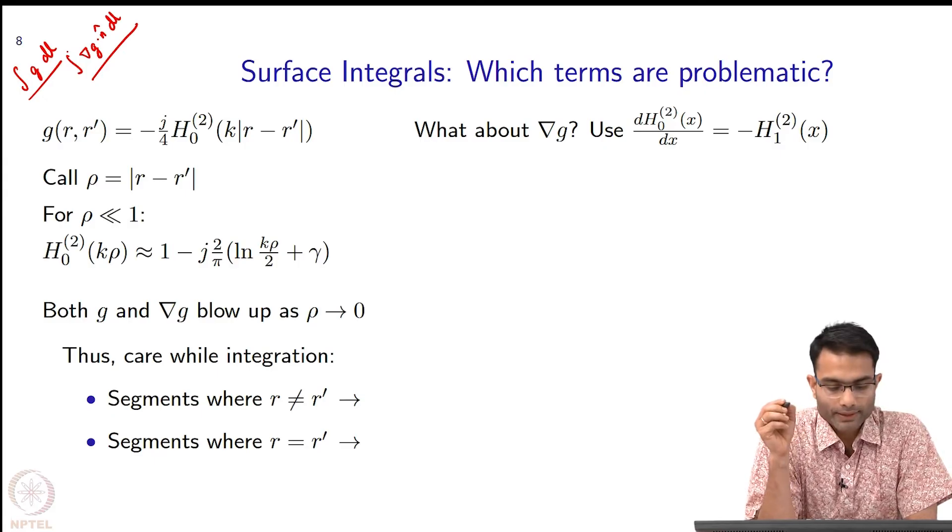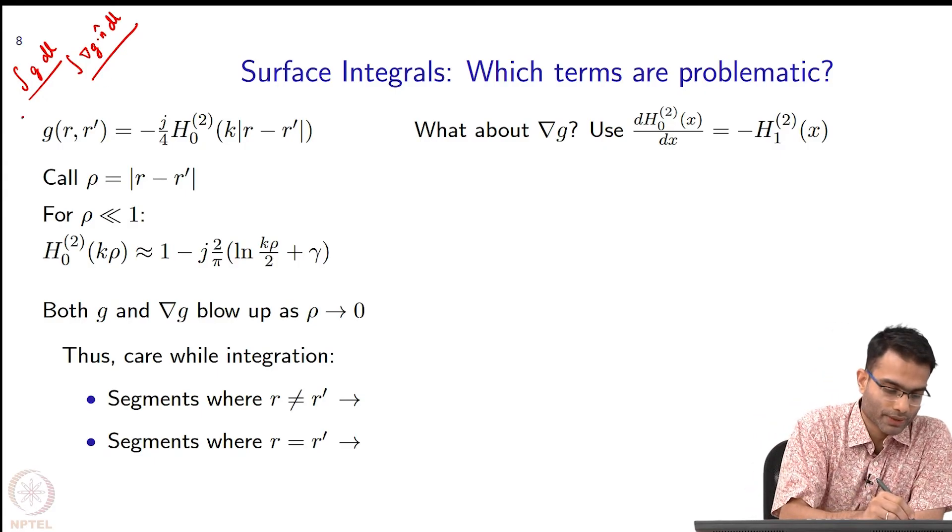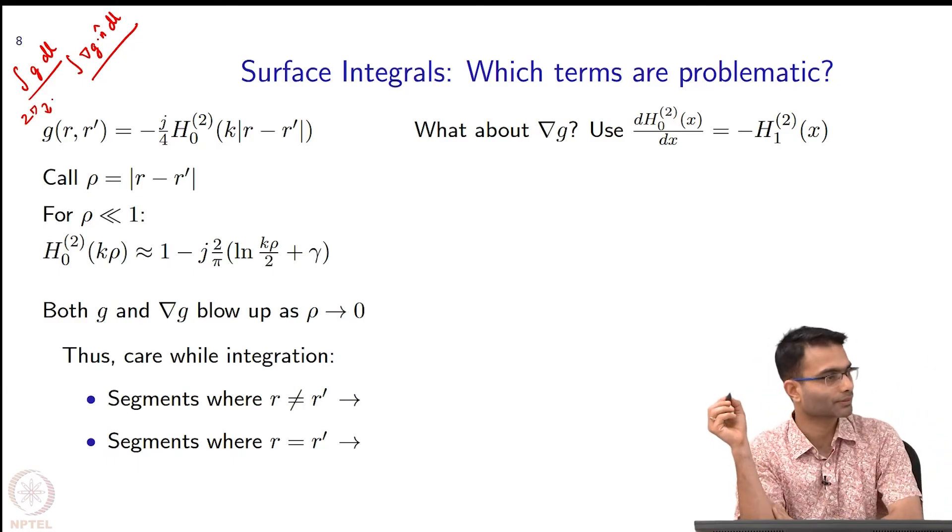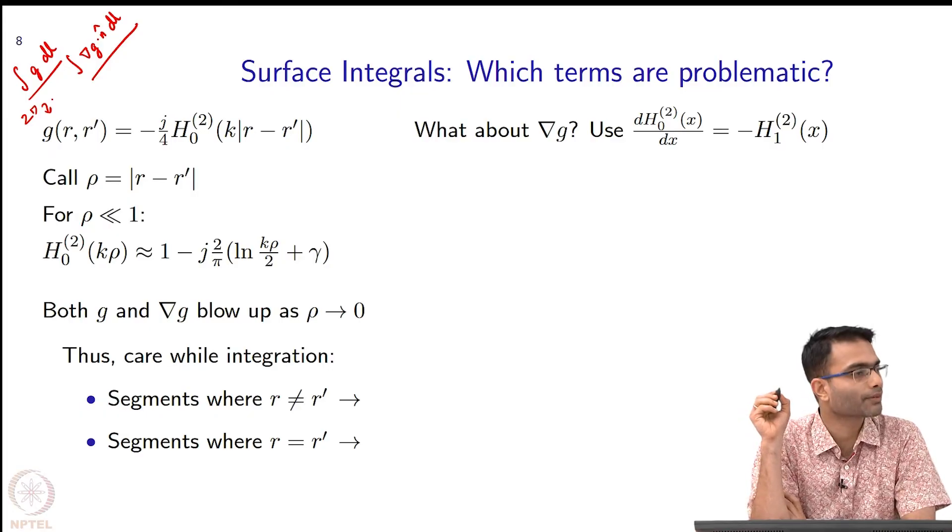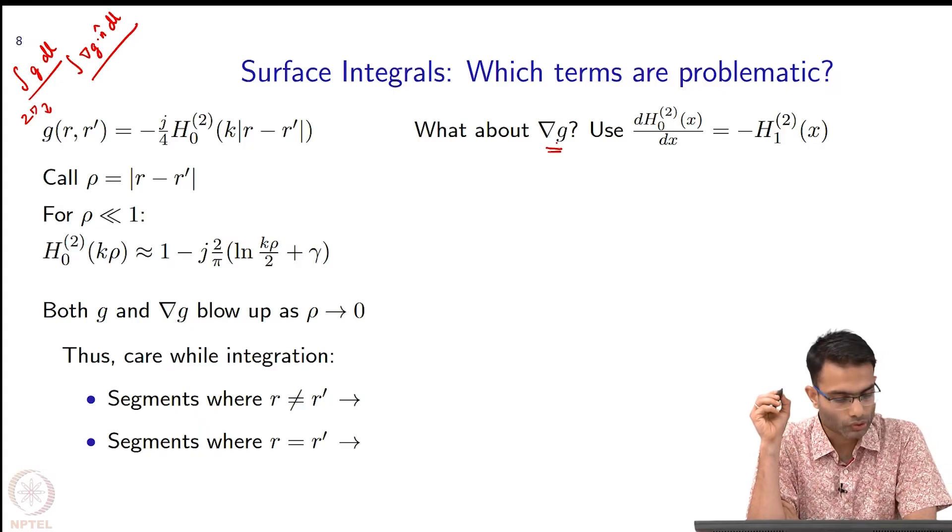We spent an entire module talking about the Green's function and we came up with the 2D Green's function as here. It is minus j by 4 times the Hankel function. This one everyone remembers. The one term that we did not calculate so far is what is grad G.